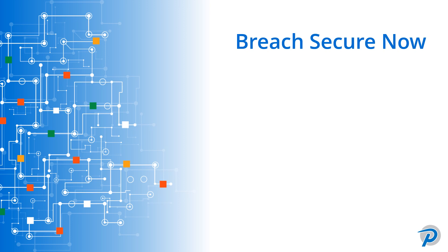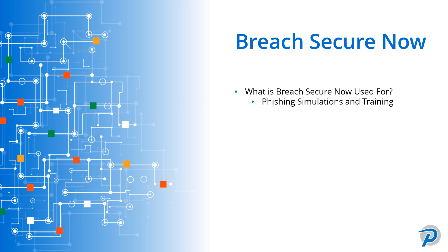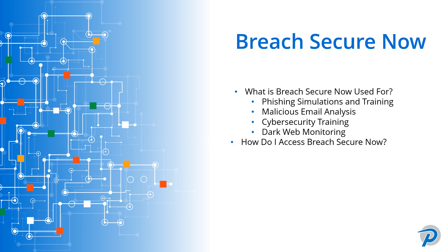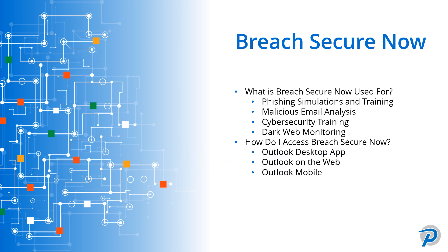To kick things off, we will first cover the four main functions of Breach Secure Now, which are phishing simulations and training, malicious email analysis, cybersecurity training, and dark web monitoring. Then in the video we will cover how you can access Breach Secure Now through your Outlook desktop app, your Outlook on the web, Outlook mobile, and also through Breach Secure Now's web portal.